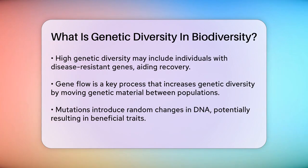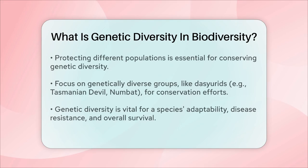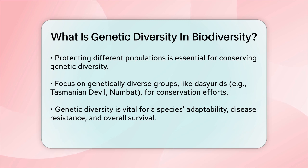To conserve genetic diversity, it's important to protect different populations of a species. For example, scientists suggest focusing on saving genetically diverse groups like the Desirids, which include animals like the Tasmanian Devil and the Numbat. These groups have a higher genetic diversity because they come from more ancient evolutionary lines.